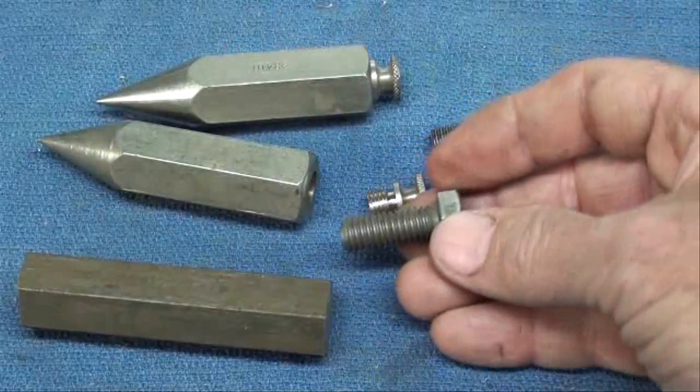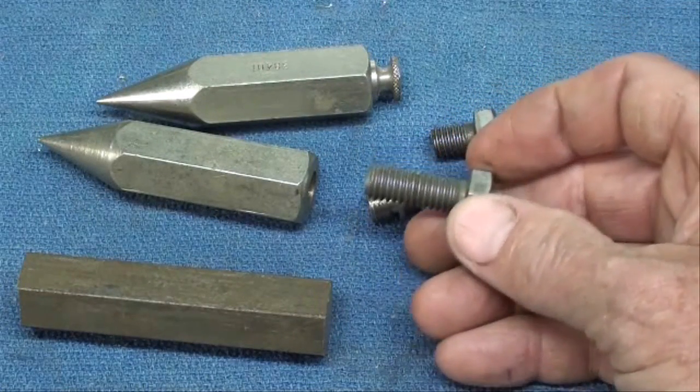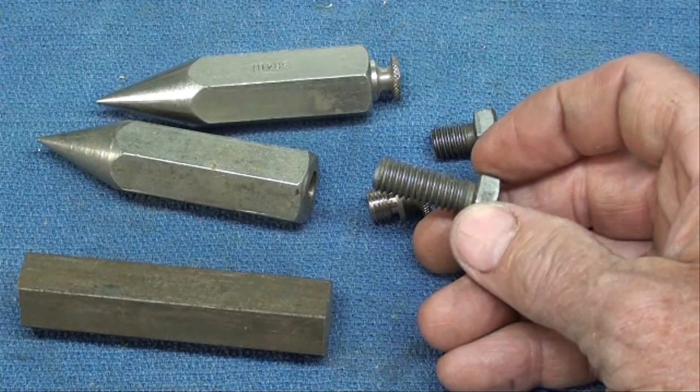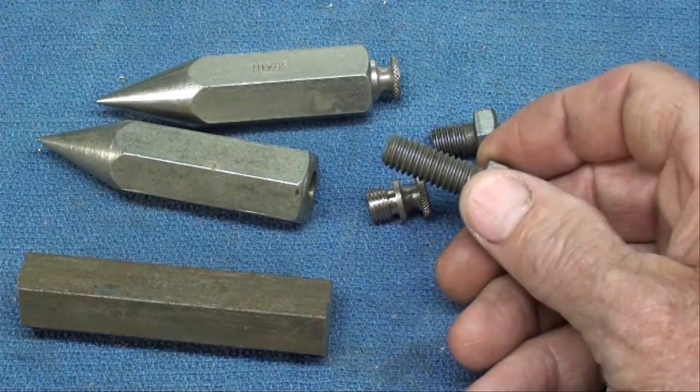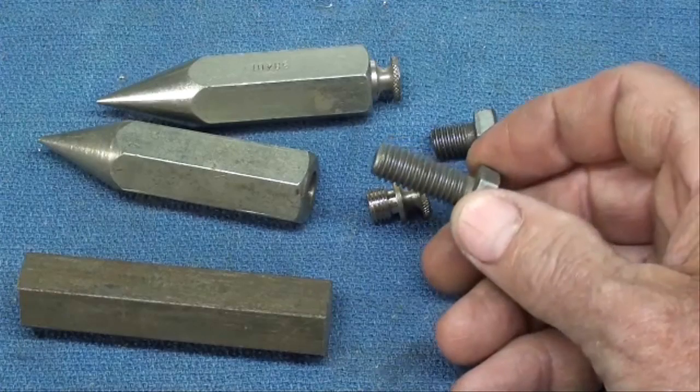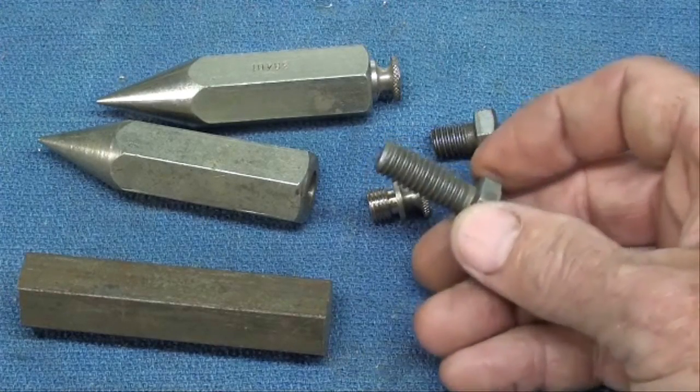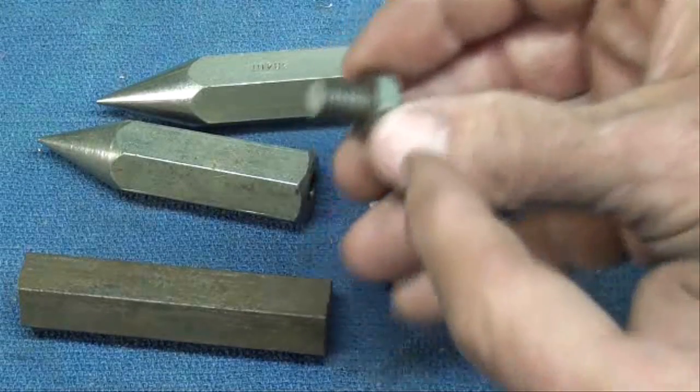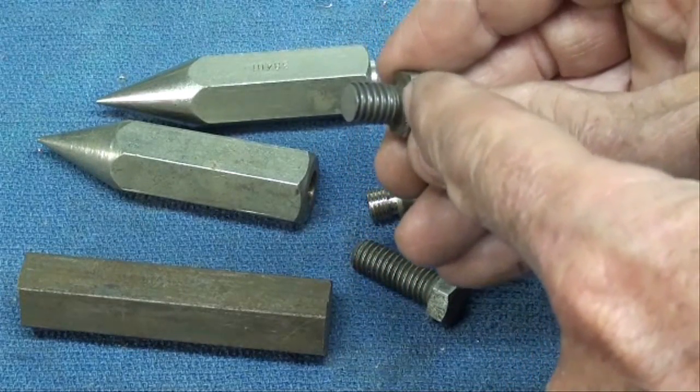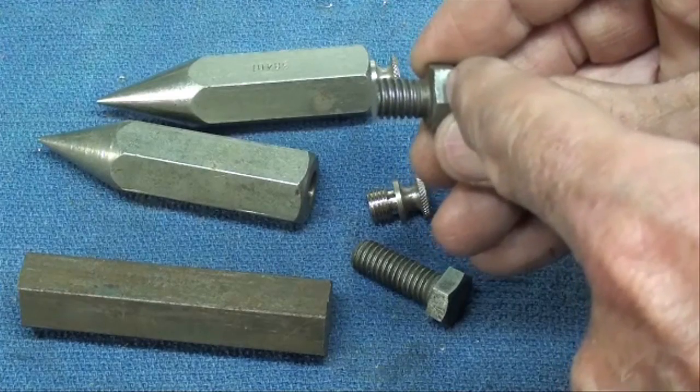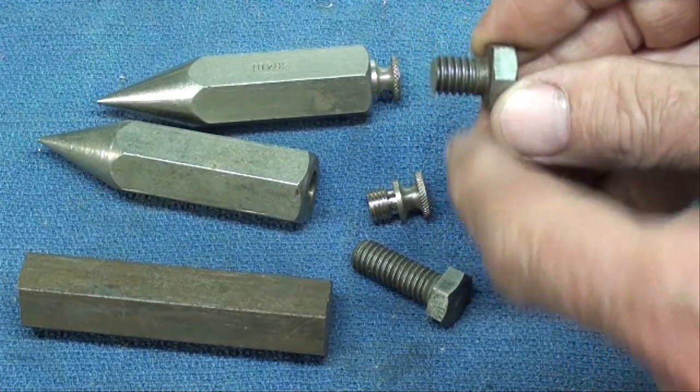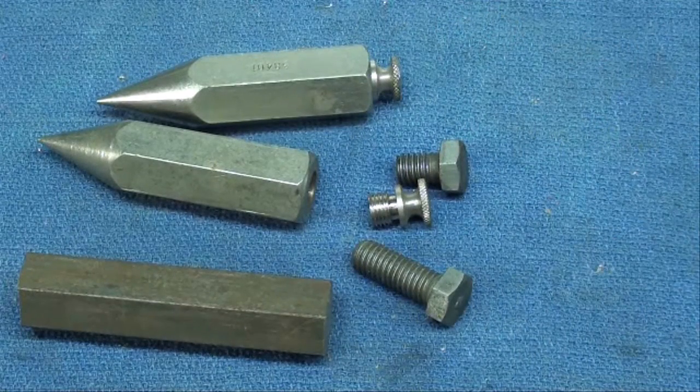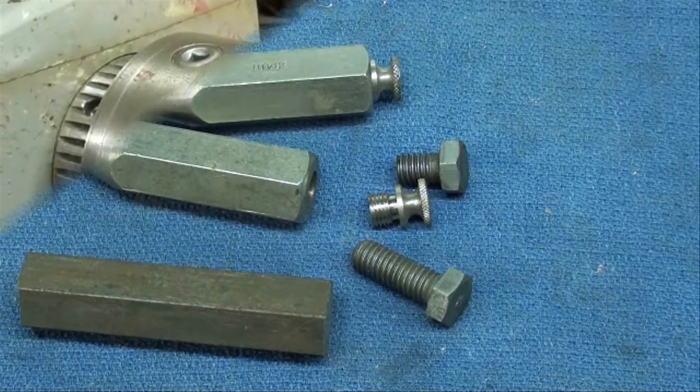And this bolt is 3/8-16 so we're going to drill it 5/16 and then we're also going to counter drill it only about an eighth of an inch deep and that allows this bolt to go in all the way because you know there's a little bit of a taper usually on the end where they end the thread and it doesn't go in all the way up to the head so we will get around that by counter boring just a little bit. So I'll see you at the lathe momentarily.